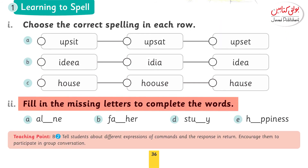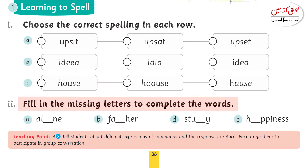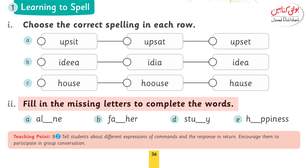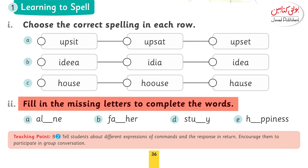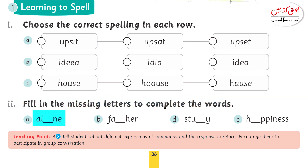Uske baad hamara agla jo sawal hai, yahaan pe aapke paas kuch words diye gaye hain jinke andar ek alphabet missing hai, aapne woh missing alphabet fill karna hai. Filling the missing letters to complete the words. No. 1: alone. No. 2: father. No. 3: study. And No. 4 is happiness.